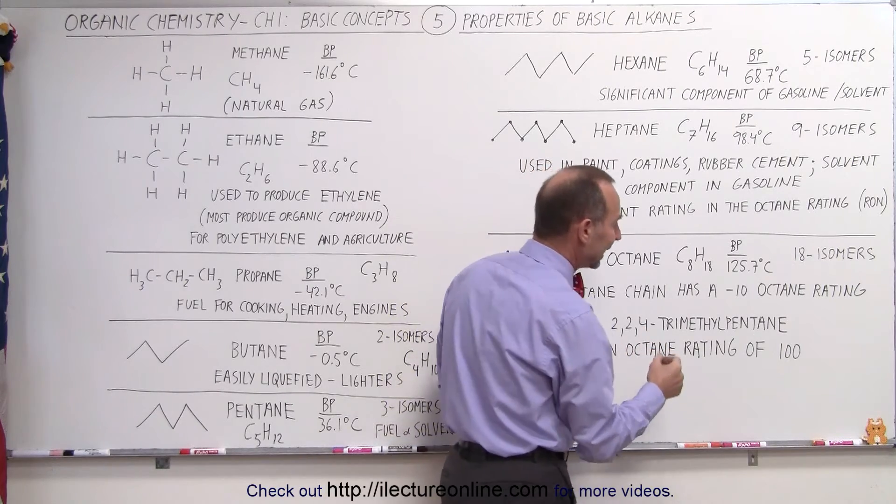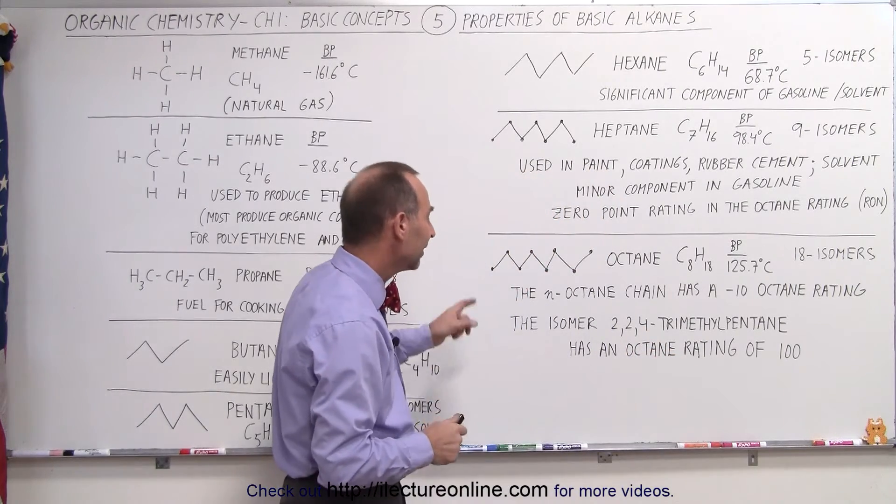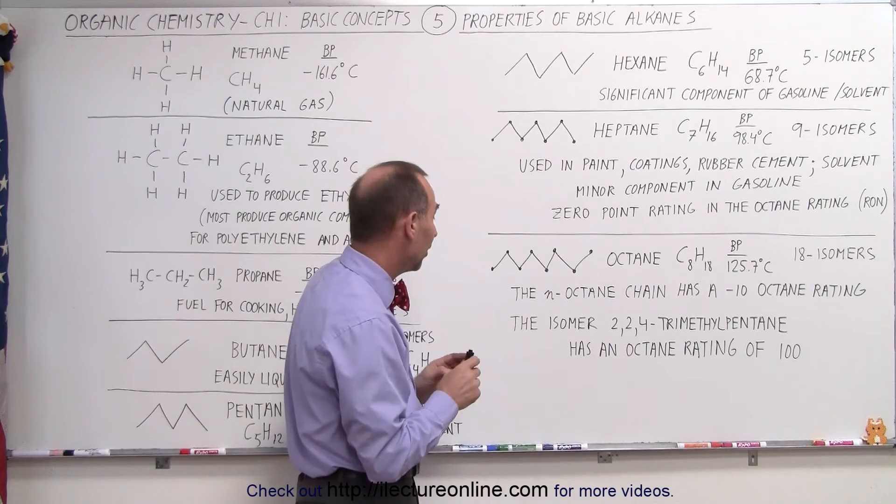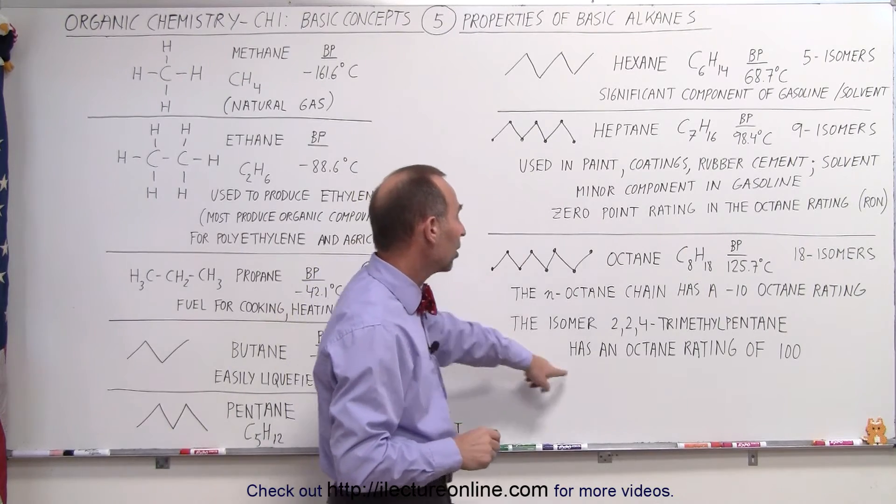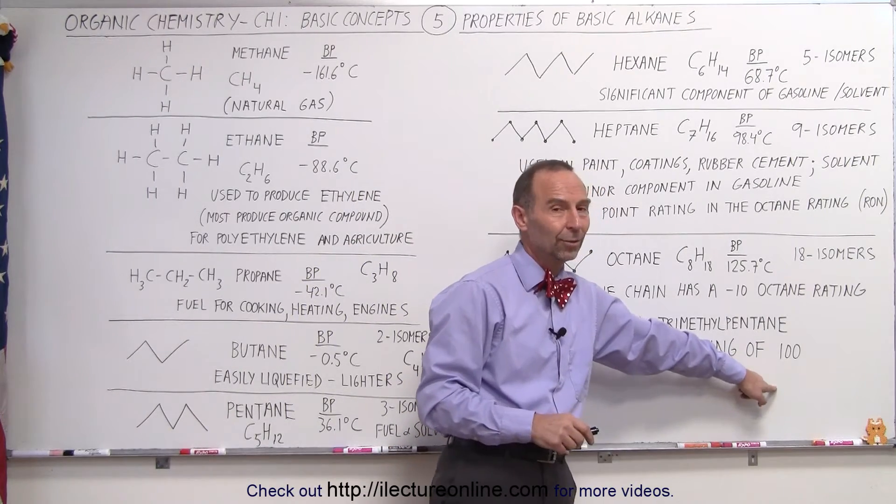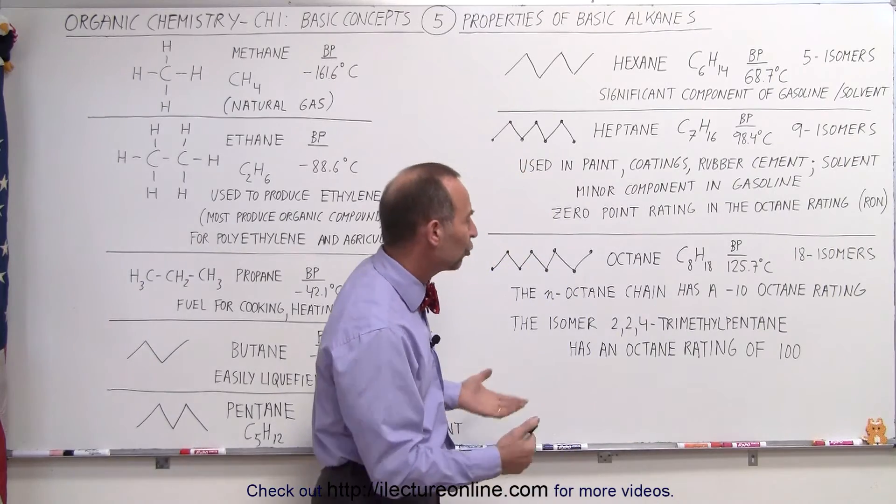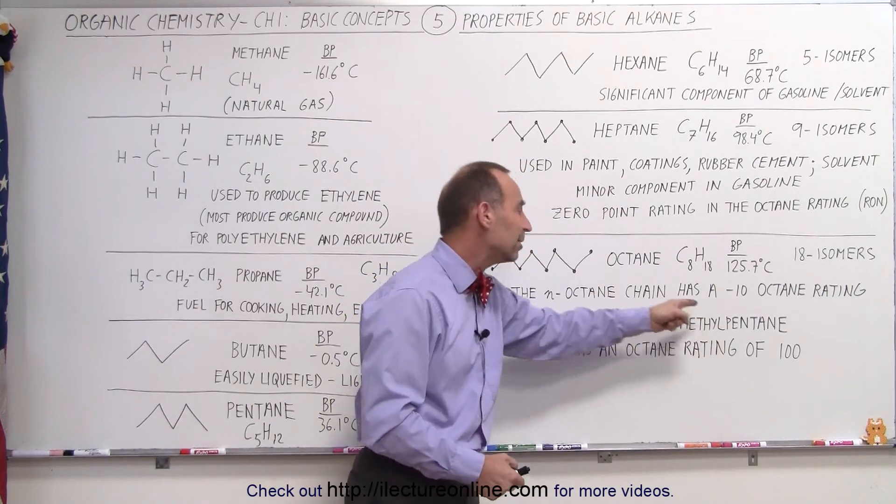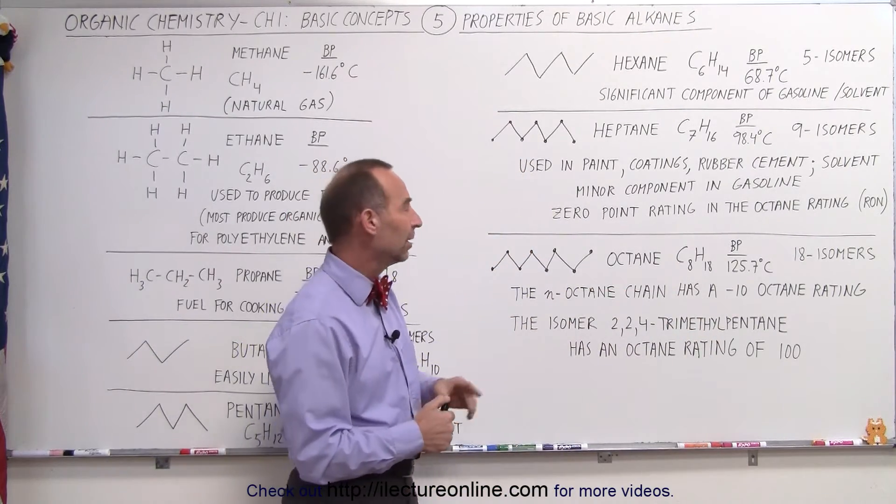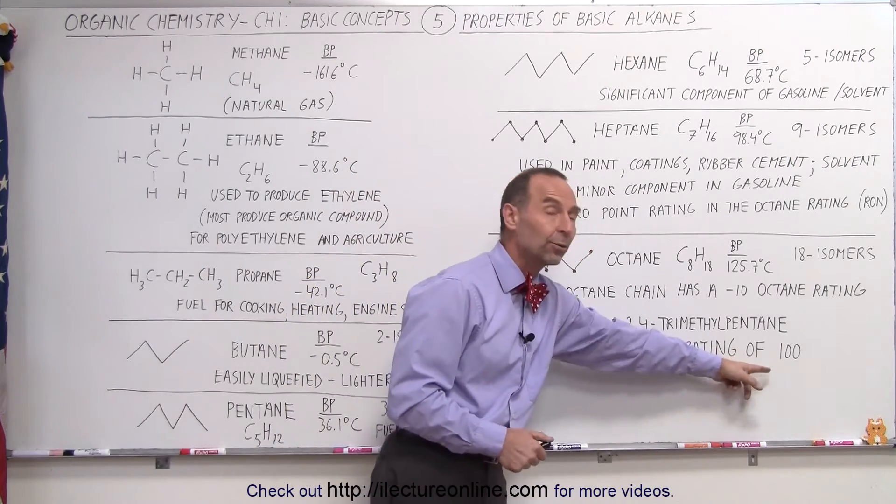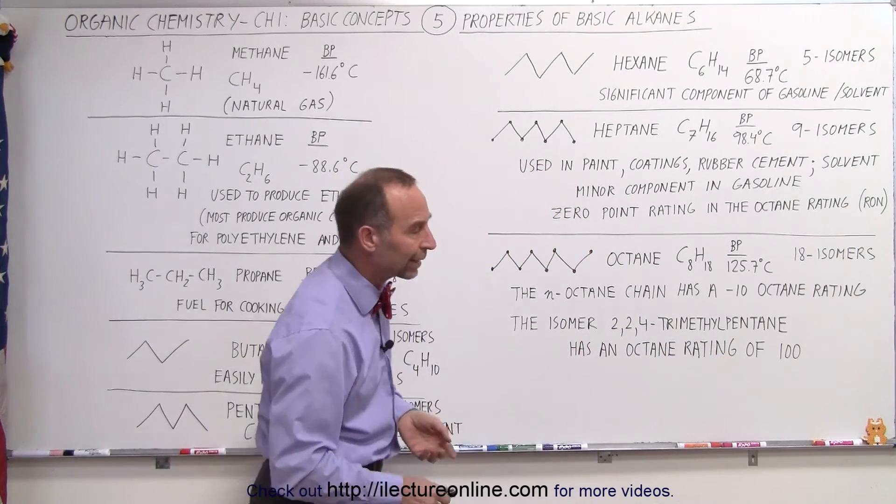The first two methyl groups are attached to the second carbon in the pentane chain and the third one is connected to the fourth carbon in the five pentane chain. That particular isomer of octane has an octane rating of 100 which is of course very good and that's what you want.